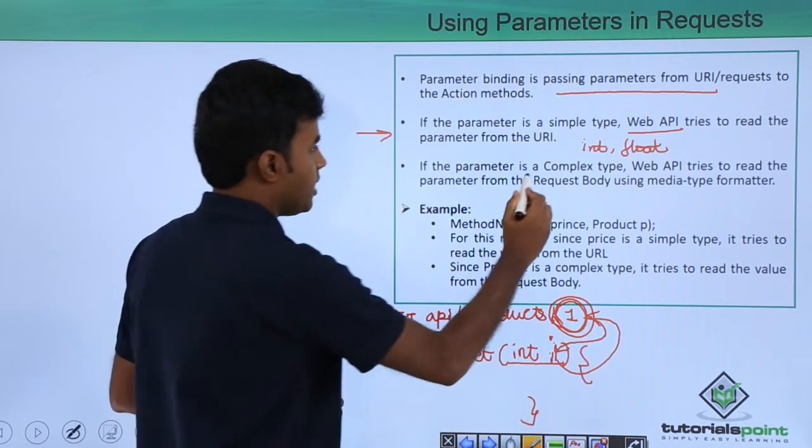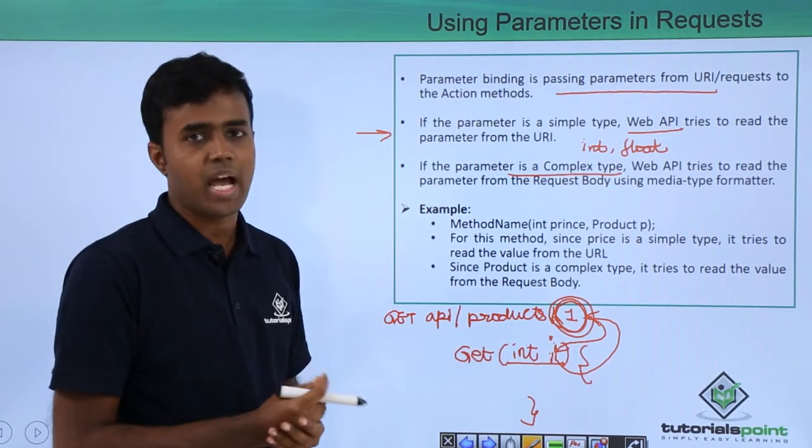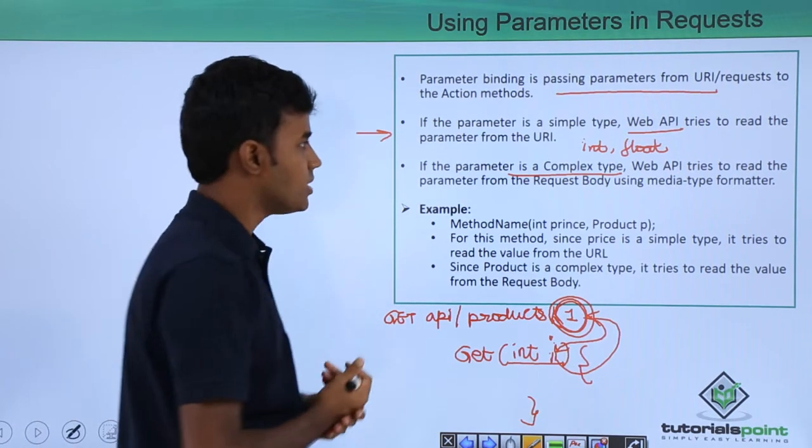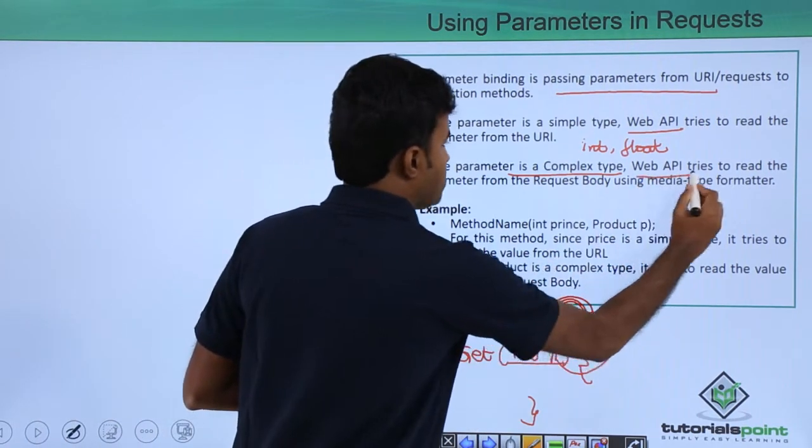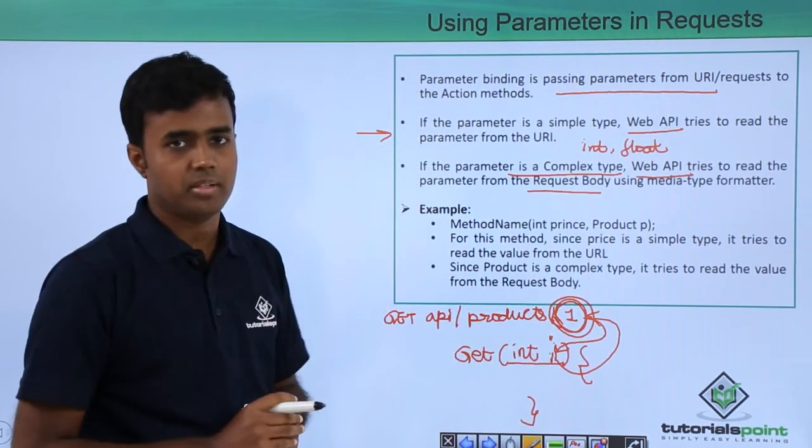If the parameter is a complex type, means the types that we create, for example, I have a class called customer, product and so on. Web API tries to read the parameter from the request body using media type formatter.